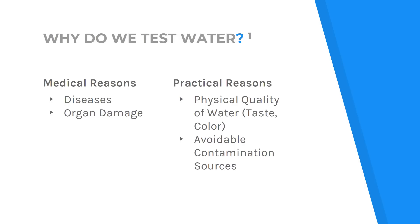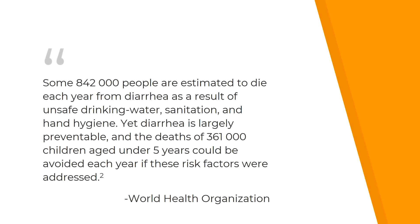Also, with certain contaminants such as E. coli, their presence can indicate contamination sources such as agricultural waste or human waste, and those are avoidable if you know that they're present. The World Health Organization estimates that about 842,000 people die every year from diarrhea due to unsafe drinking water, and this is a preventable problem.